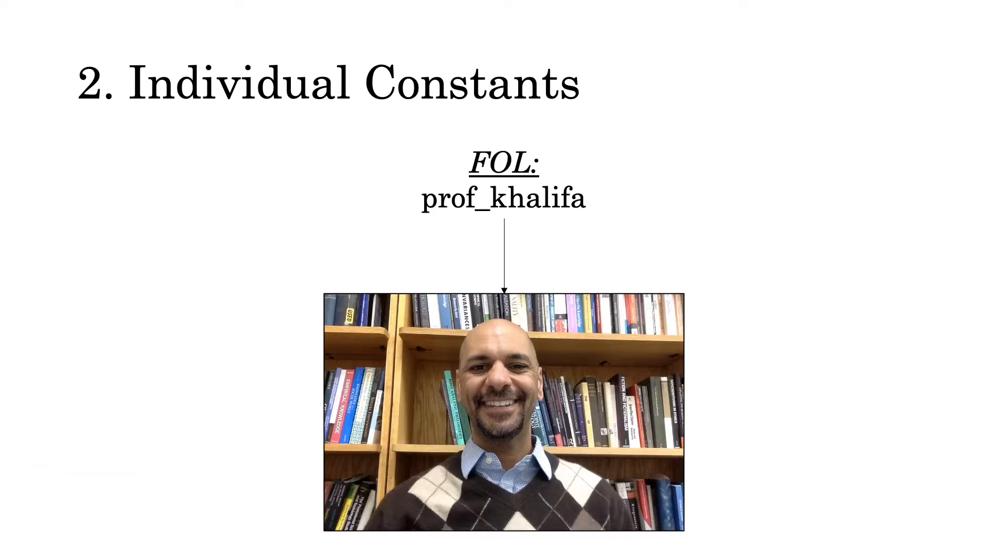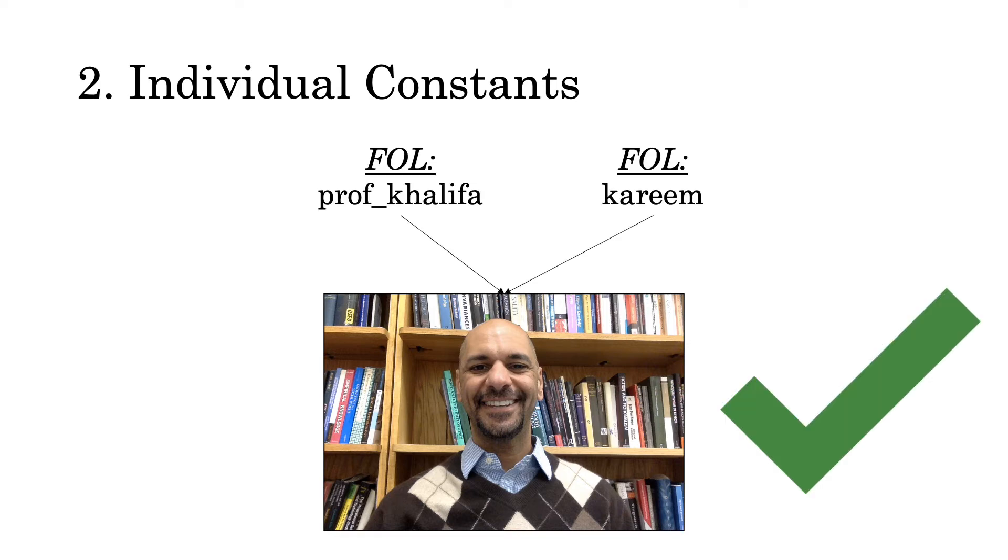You guys might call me Professor Khalifa. However, I go by other names, believe it or not. For instance, my friends and colleagues are on a first name basis with me, so they call me Kareem. That would be another name. This is acceptable according to first order logic that I can have two names. They refer to the same object, me.